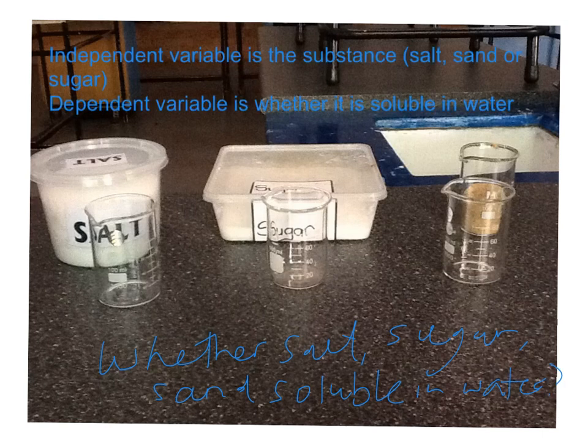In this case, the factor that we are changing is the substance. So the independent variable would be the substance being tested — whether it's salt, sand, or sugar. The thing that we will be measuring is the dependent variable, which in this case would be whether the substance is soluble or not in water.